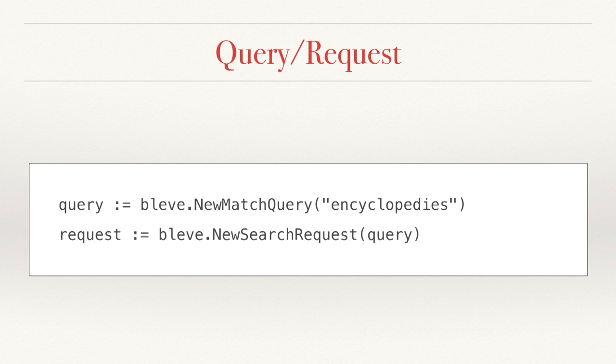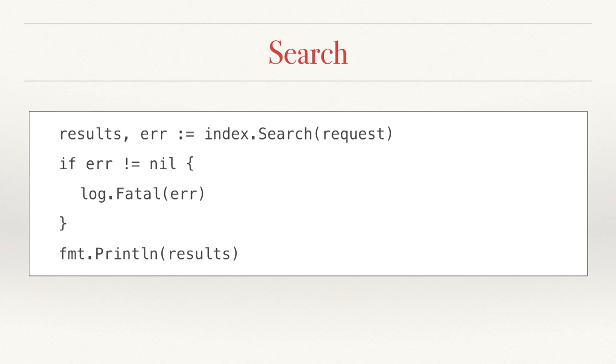So now we're ready to go ahead and search. Blovie supports many kinds of queries. We're only going to look at one here, which is a match query, and we're going to look for that "encyclopedias" term that we talked about earlier. The query is describing what we're looking for, but we're going to create another object called the request — and the way I think of it is this is telling Blovie how we want the results returned to us, so things like how many results per page. Again, we're just going to use the default request here. And now that we have the request, we can actually execute the search using the search method. That's going to return us the results, and then finally we print it out.